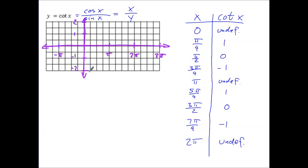Setting up our coordinate plane, at x = 0 the cotangent is undefined, so our first asymptote runs along the y-axis. At pi over 4, the value is 1; at pi over 2 it's 0; at 3 pi over 4 it's -1. Our next asymptote falls at pi. Then at 5 pi over 4 we have 1, at 3 pi over 2 it's 0, and at 7 pi over 4 it's -1. At 2 pi we have another asymptote. The graph gets closer and closer to each asymptote, never reaching it, and the pattern repeats indefinitely.